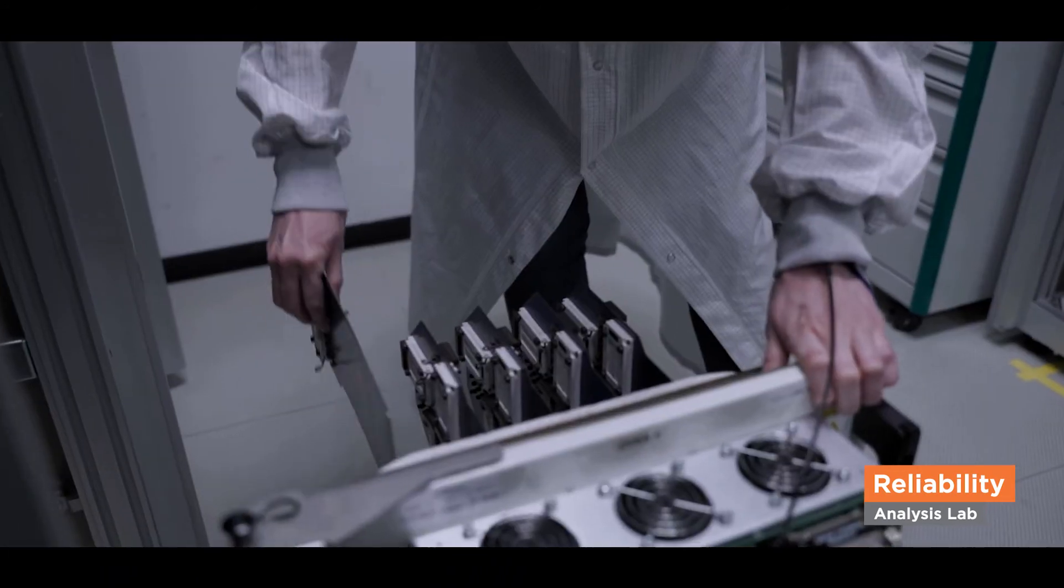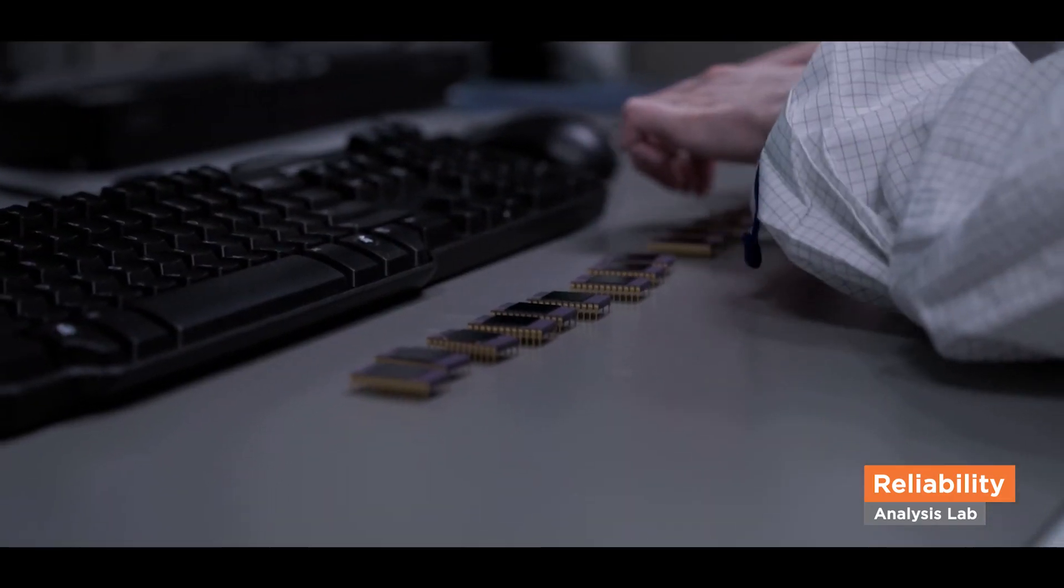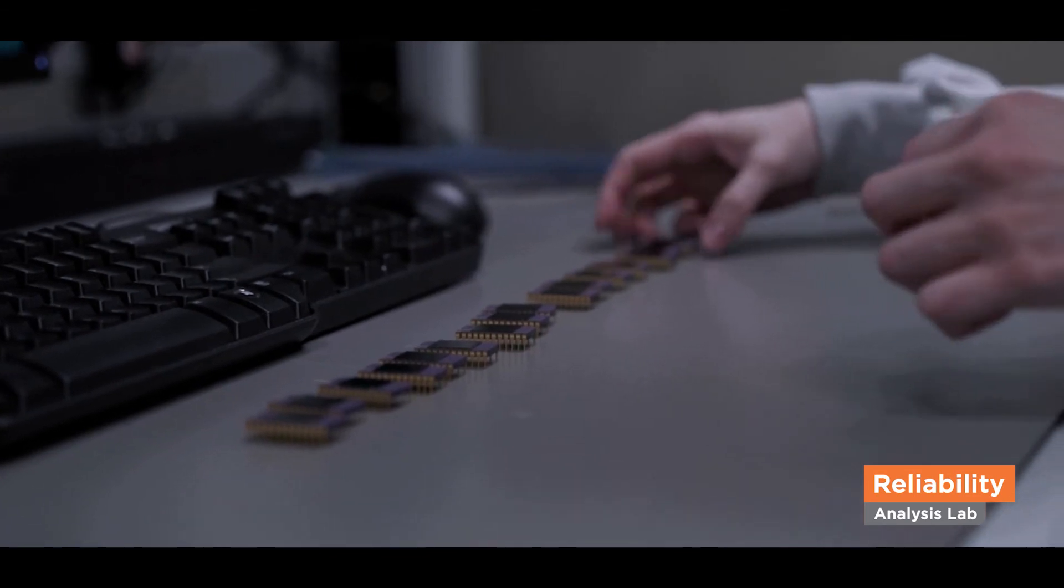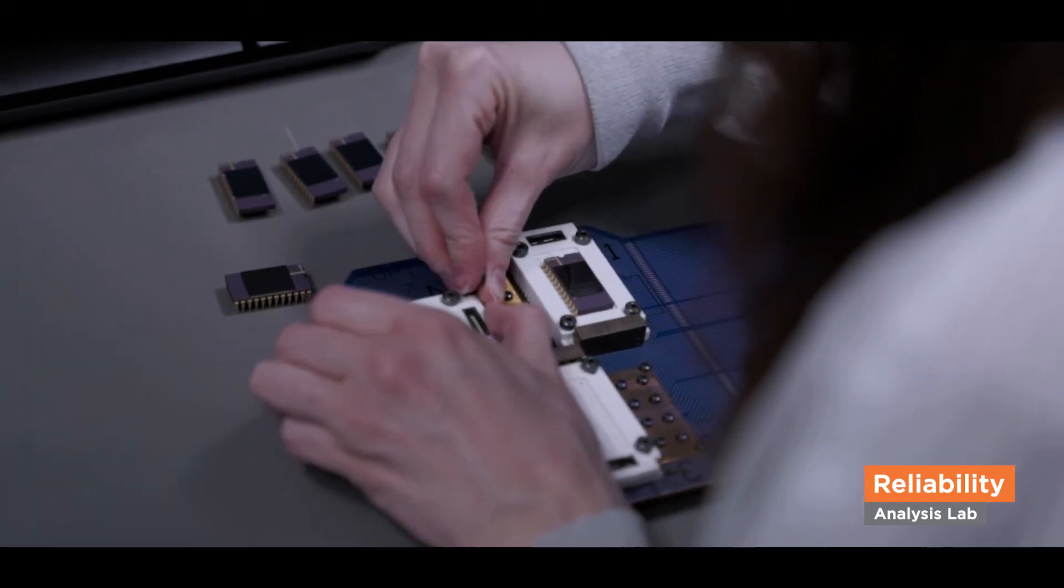Electromigration stresses the back end of our technologies, specifically the metal lines that are applied to the wafer to contact the circuits. In this context, stress means high currents and high temperatures over a comparatively long time, several days to weeks.